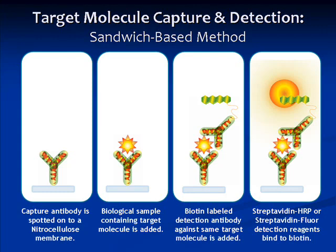Then a second antibody is added, which binds to a non-overlapping epitope on the same protein. This antibody is conjugated to biotin, which allows for the binding of streptavidin HRP or streptavidin FLOR, as shown in the last panel. From here, the signal can be easily detected using routine laboratory procedures.